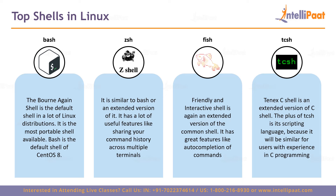Now let us look at the top shells in Linux. There is not just one shell. Since Linux is open source, there are many contributors creating different types of shells. The most common default shell is bash — Bourne Again Shell — which is the default in many Linux distributions including CentOS and Ubuntu. You can further install other shells as well. Then there is zsh — Z Shell — which is similar to bash or an extended version of it.